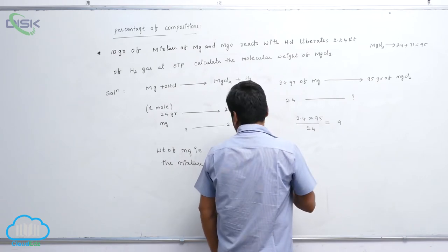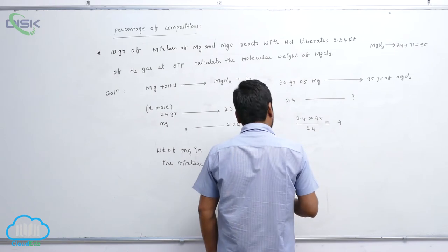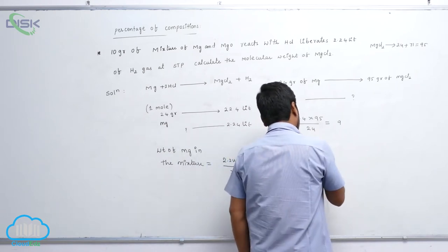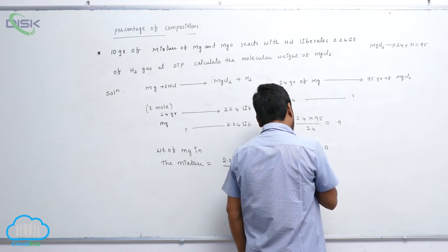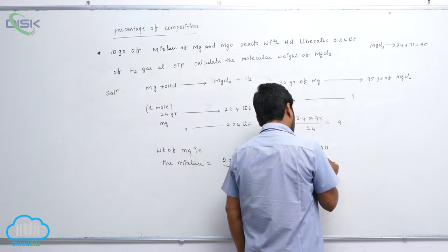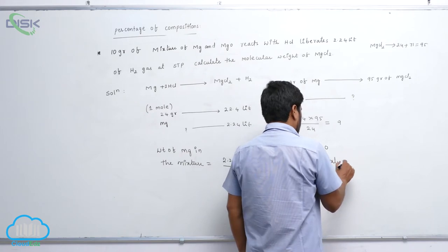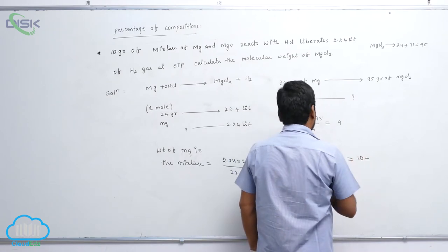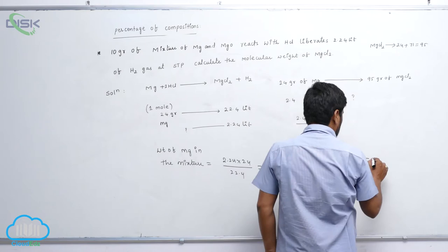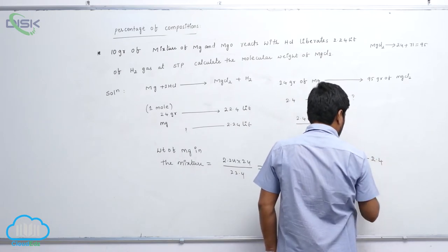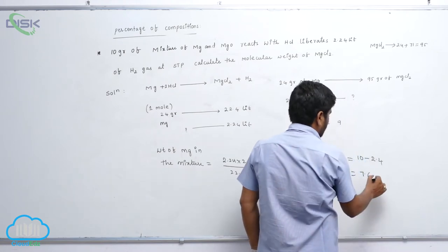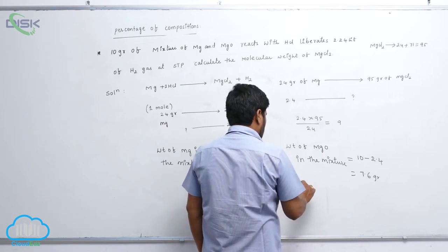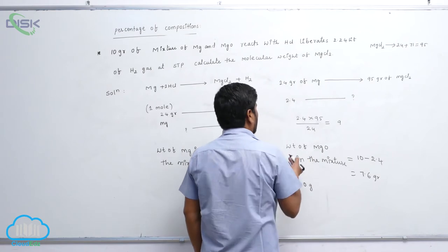The second part: the weight of magnesium oxide in the mixture equals the total weight minus the weight of magnesium. That is 10 minus 2.4 grams, which gives us 7.6 grams of magnesium oxide.